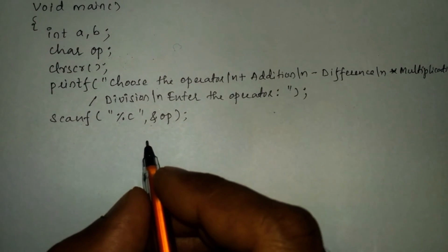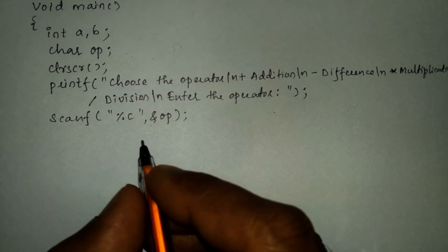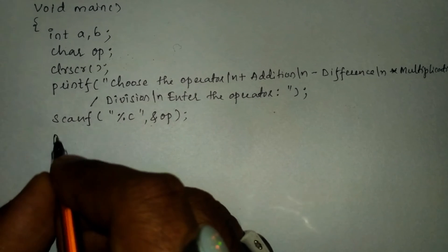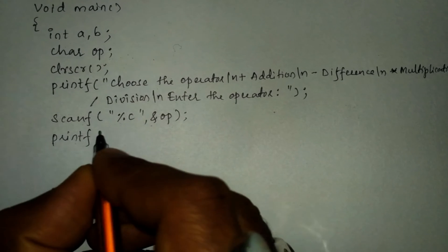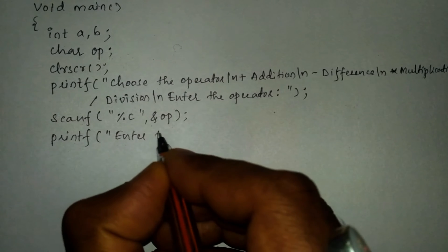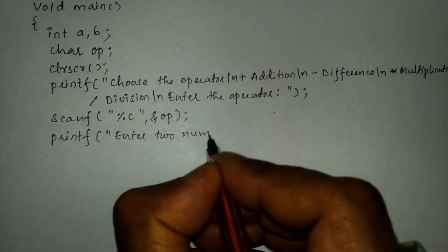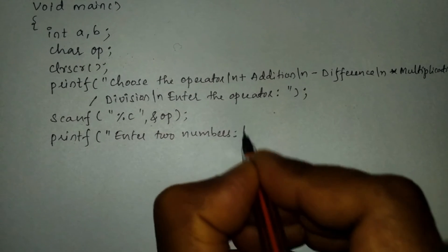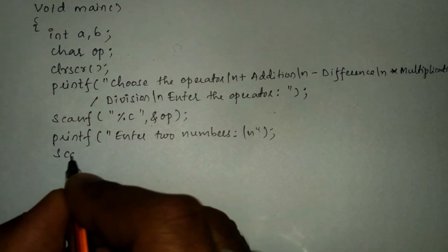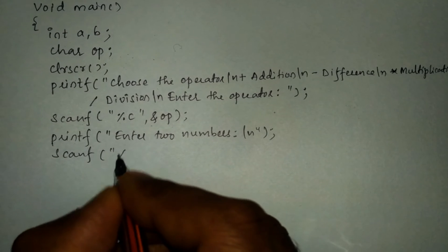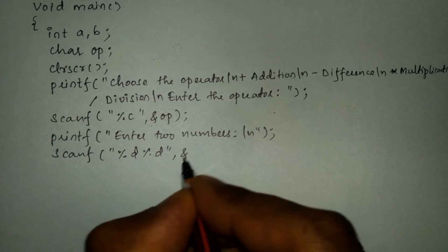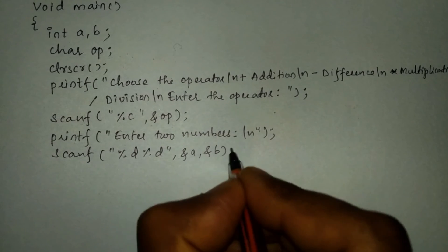After receiving the operator, it must ask the user to enter two numbers. We write a printf statement with 'enter two numbers:' followed by backslash n and a semicolon. Then using a scanf statement we write %d %d with ampersand a and ampersand b to receive both integer values.